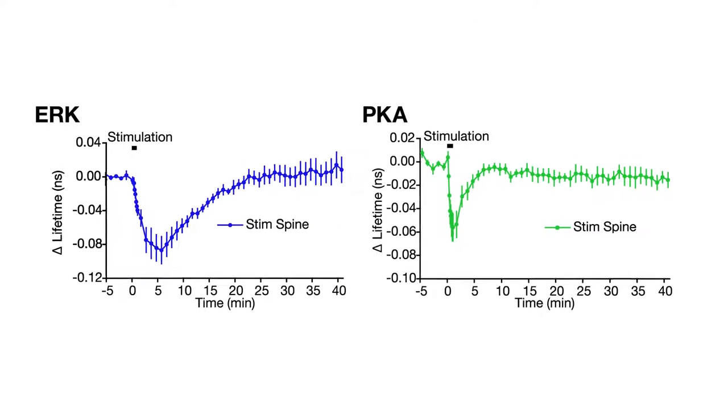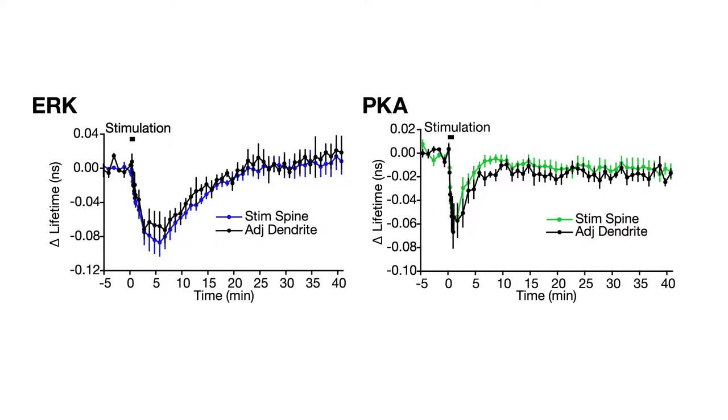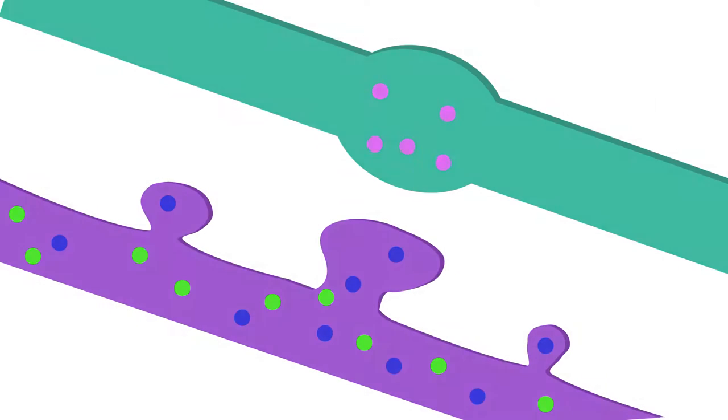But the ultrasensitive sensors revealed that the kinases weren't active just in the spine. The activity also spread into the dendrite and nearby spines. This indicates that the influence of stimulation spreads to multiple nearby spines and could facilitate growth of those as well.